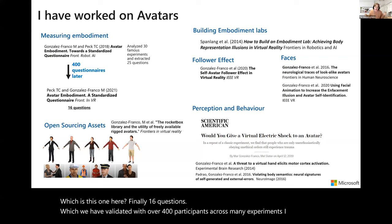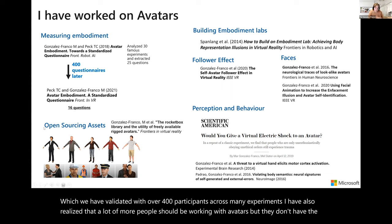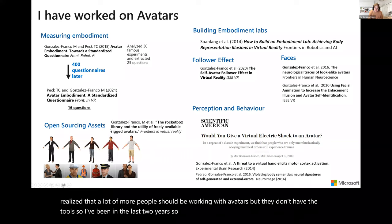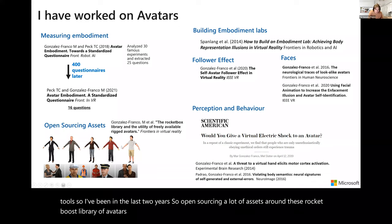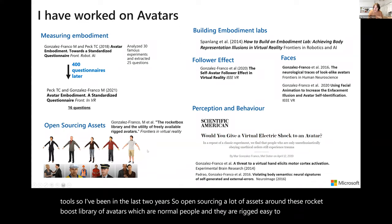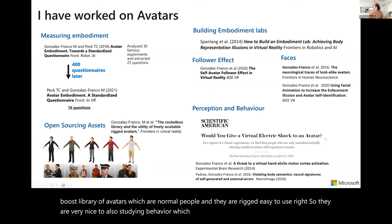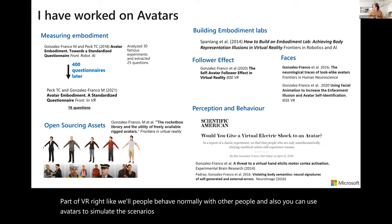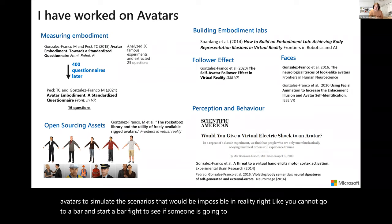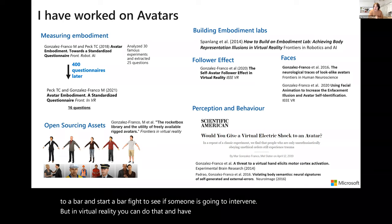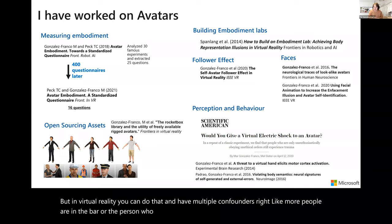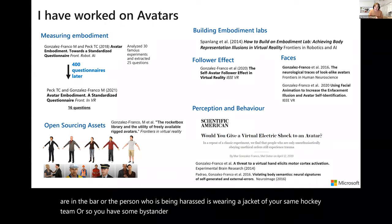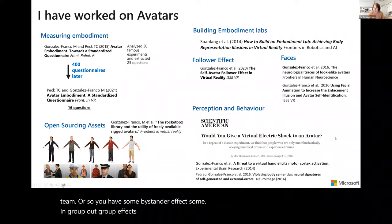I realized that more people should be working with avatars but don't have the tools. So for the last two years I've been open-sourcing assets — the Rocket Post library of avatars, which are like normal people, rigged and easy to use. They're also very nice for studying behavior: will people behave normally with other people? You can use avatars to simulate scenarios impossible in reality, like a bar fight to see if someone intervenes, with confounders like bystander effects and in-group/out-group effects.